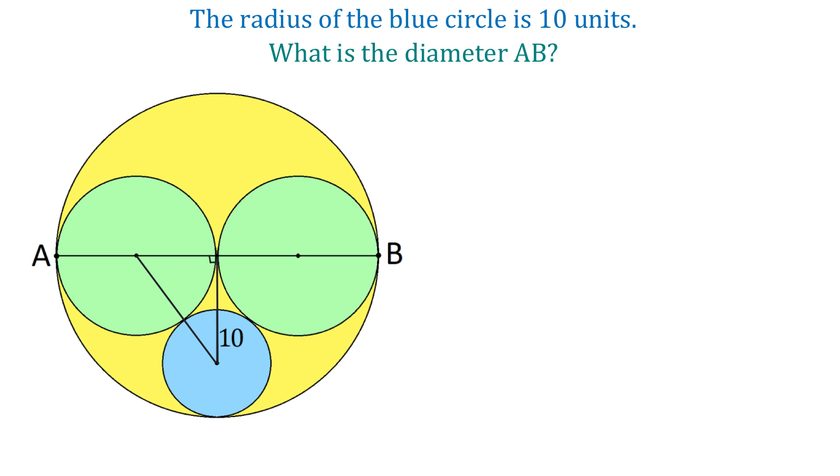In this triangle, the top side is the radius of the green circle and let's call it X. The hypotenuse connects the centers of two externally tangent circles, therefore it passes through the point of tangency. So if the green circle has the radius X and the blue circle has the radius 10, then the hypotenuse will be X plus 10.